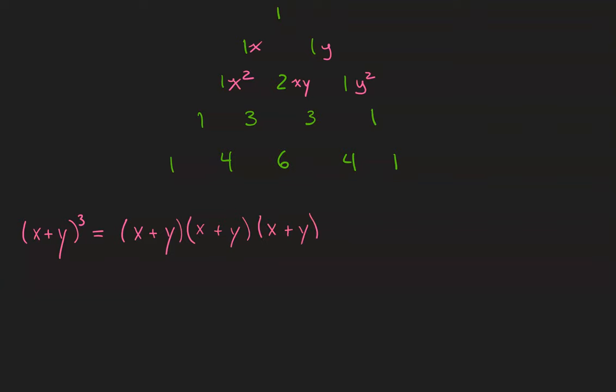For each of the three factors we are going to choose an x or a y. So the options are xxx, xxy, xyx, and yxx.